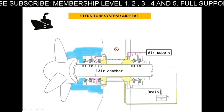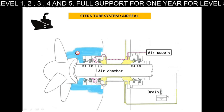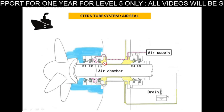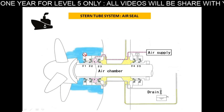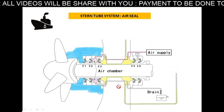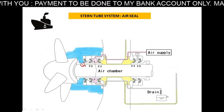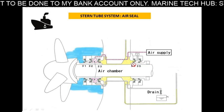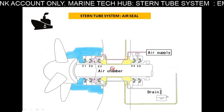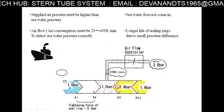The basic concept of the sealing arrangement is to keep water from coming inside and oil from going out. Nowadays we use bio oil, so if oil leaks outside it is not harmful to the sea. You can see the liner here — there are two liners for the stern tube system.